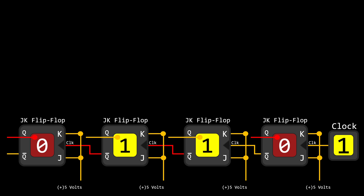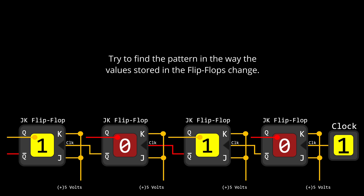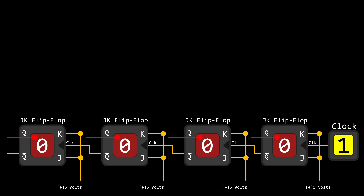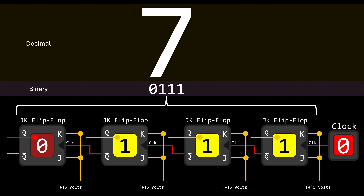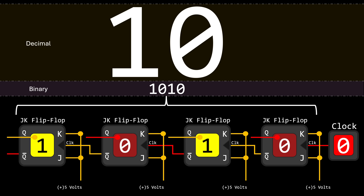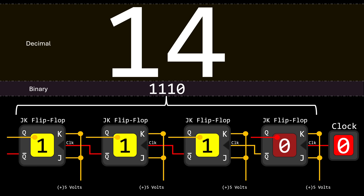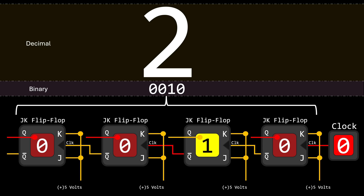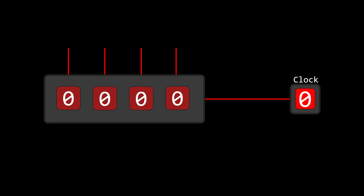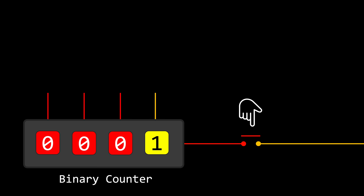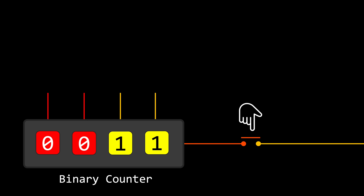There's a pattern here. Consider the content of the four flip-flops as a 4-bit number — every clock rising edge causes this number to increment by 1. When the maximum value representable by a 4-bit number is reached, the next rising edge returns the number to 0, where it begins incrementing again. We can abstract this circuit into a single component. Replacing the clock with a push button allows us to control when rising edges occur, so the stored value increments only when we press the button. And just like that, we've created a binary counter.